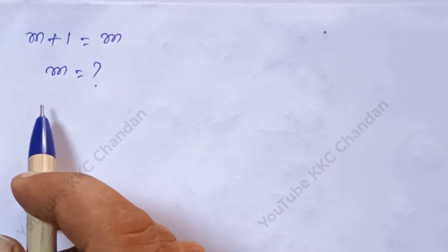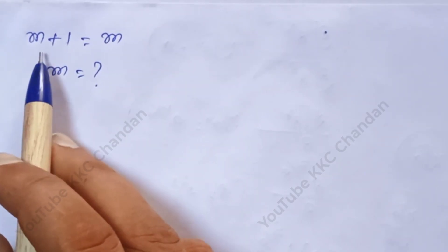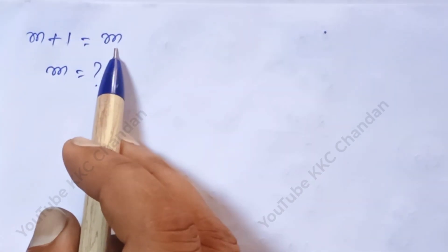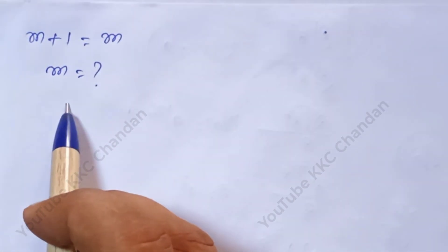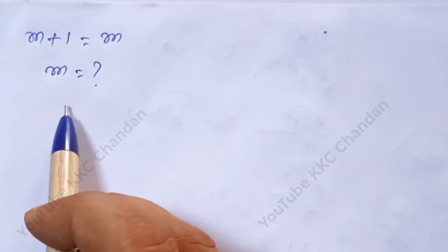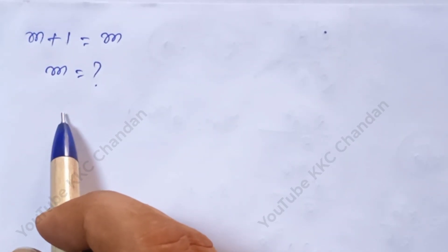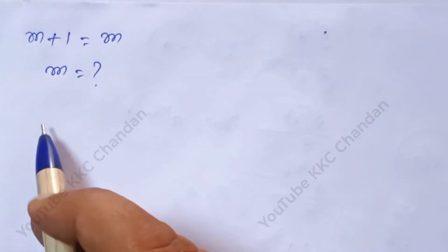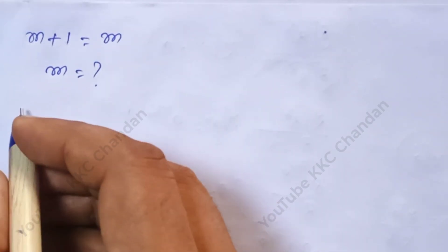The question is: √(m + 1) is equal to √m. What is the value of m? How to solve this problem? If you are visiting my channel for the first time, please subscribe. Let's start the solution.